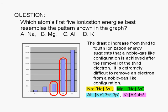Of the choices given, aluminum is the only atom that attains a noble gas-like configuration upon removal of three electrons. Removal of the electrons from the 3s and 3p sub-shells of aluminum leaves behind the neon core. Therefore, the correct answer is aluminum.